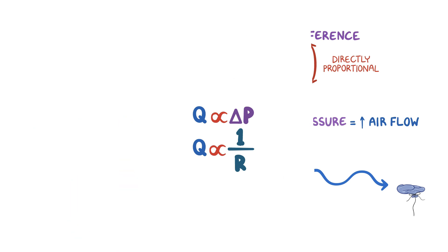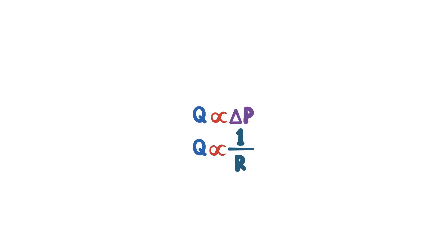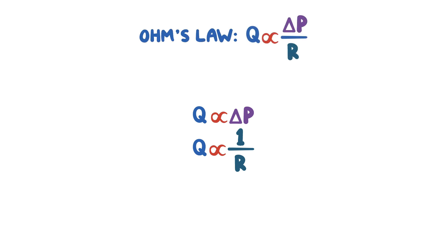By setting up these two relationships in one equation, we get Ohm's Law, which states that airflow Q equals the pressure difference delta P divided by airway resistance R.